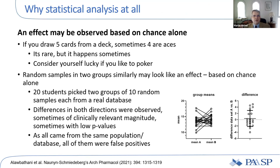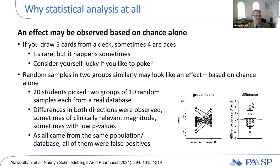By way of introduction, I want to show you an example. Generally, you know that an effect can be observed based on chance alone even if nothing is there. For instance, if you draw five cards from a deck, sometimes four of them are aces. Of course it's rare, but it happens sometimes — consider yourself lucky if you like to play poker.